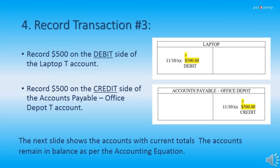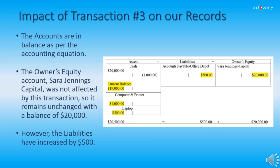Now we're ready for step four, recording transaction three. First, we record $500 on the debit side of the Laptop T-account. Next, we record $500 on the credit side of the Accounts Payable, Office Depot, T-account. Everything remains in balance. As you can see, we had an increase in liabilities of $500 and a corresponding increase in assets with our laptop purchase of $500. Our assets now equal $20,500, and our liabilities plus owner's equity now equal $20,500. Everything is still in balance per the accounting equation.